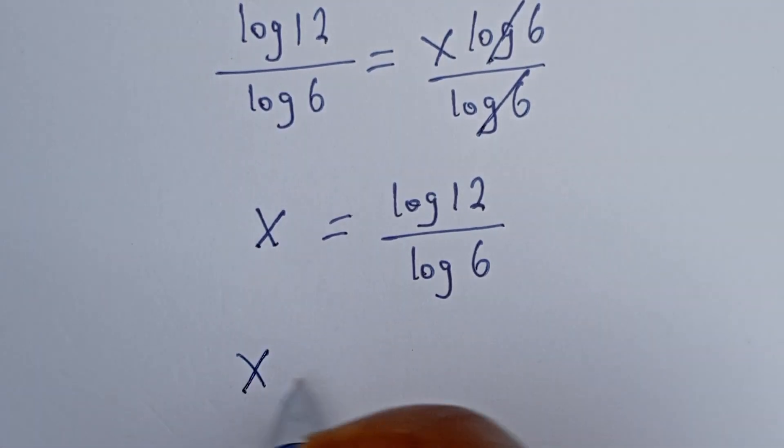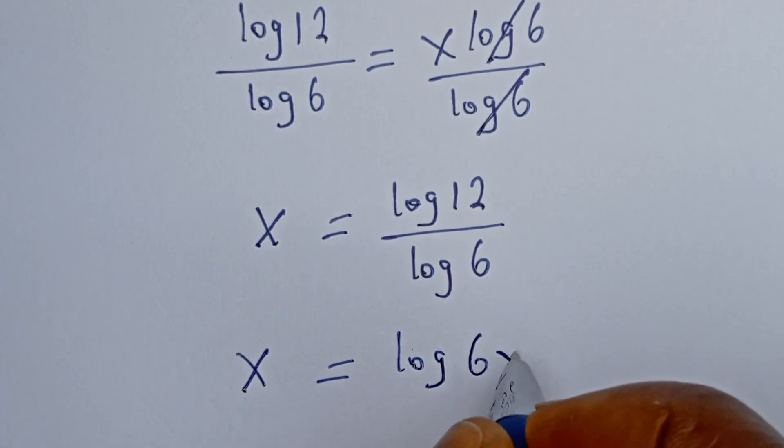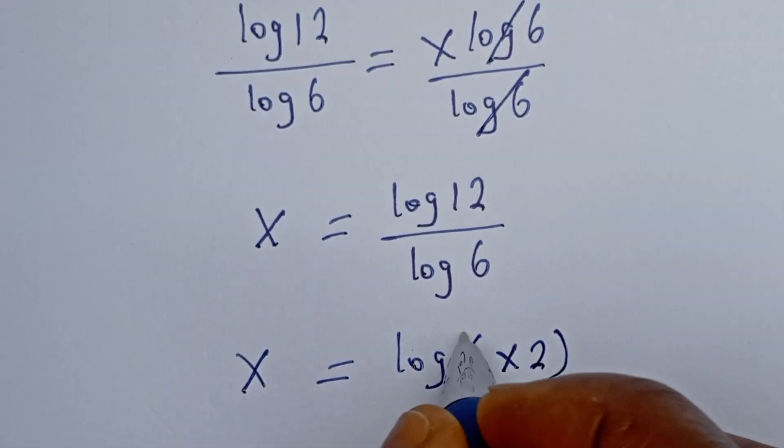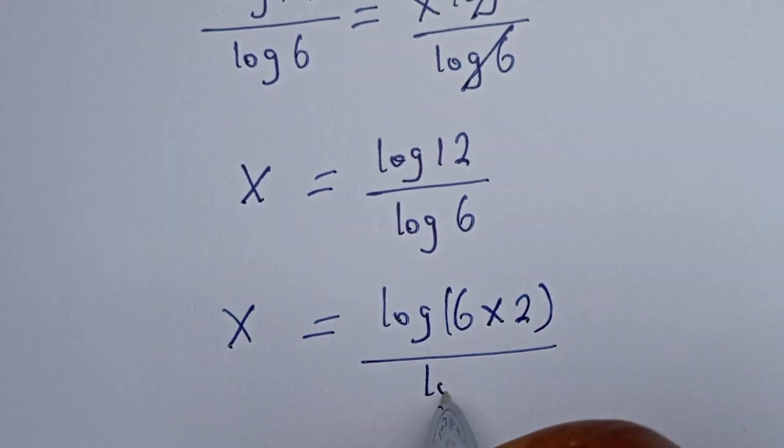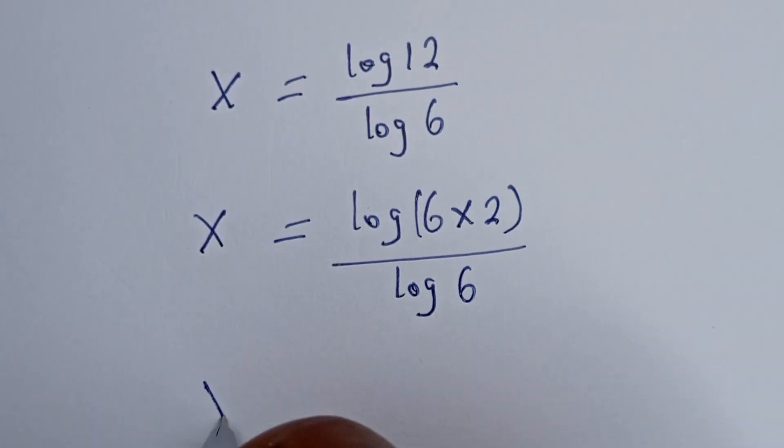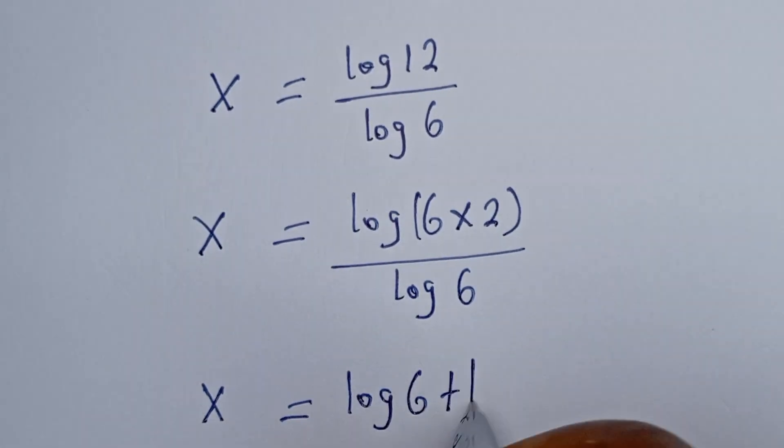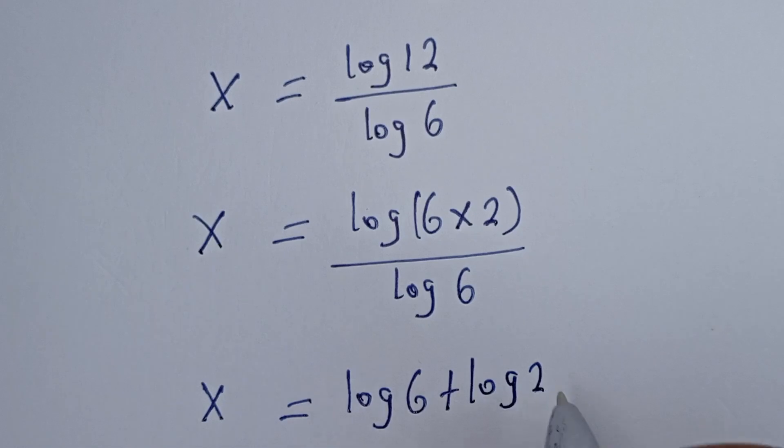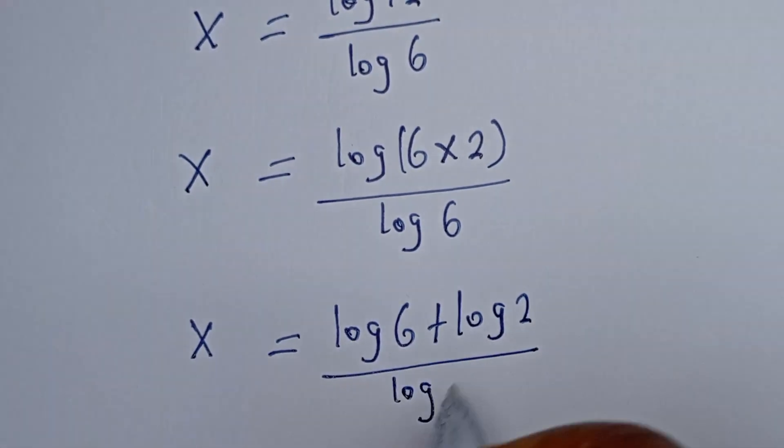Then x is equal to log 12, which can be written as log 6 multiplied by 2, divided by log 6. Then x is equal to log 6 plus log 2, divided by log 6.